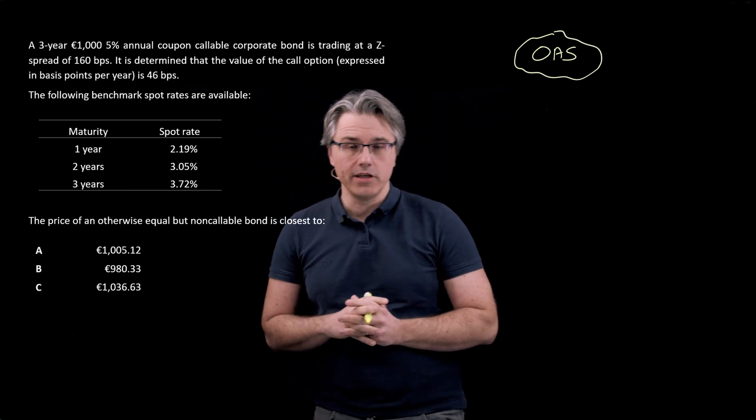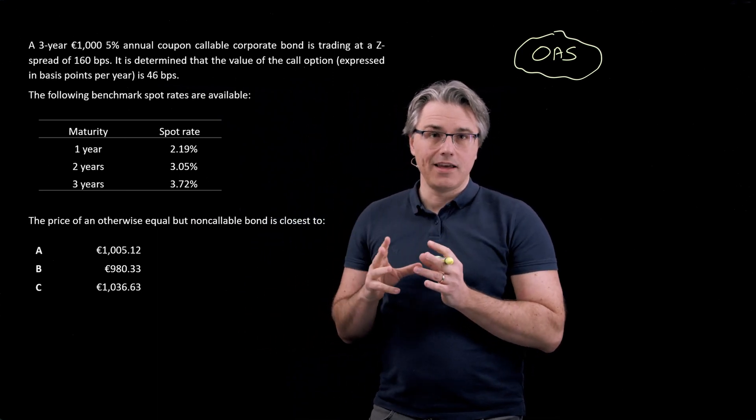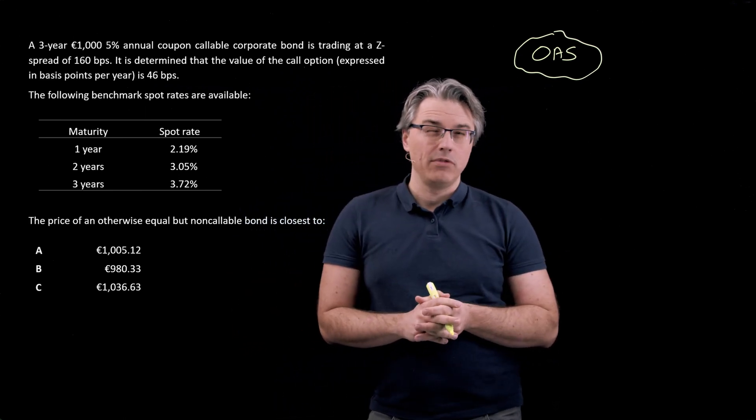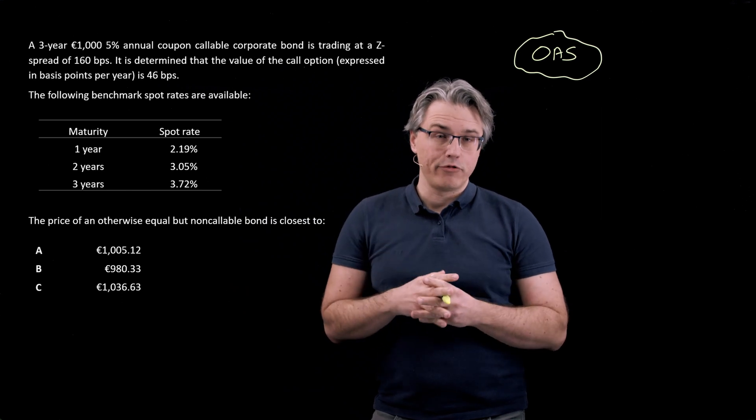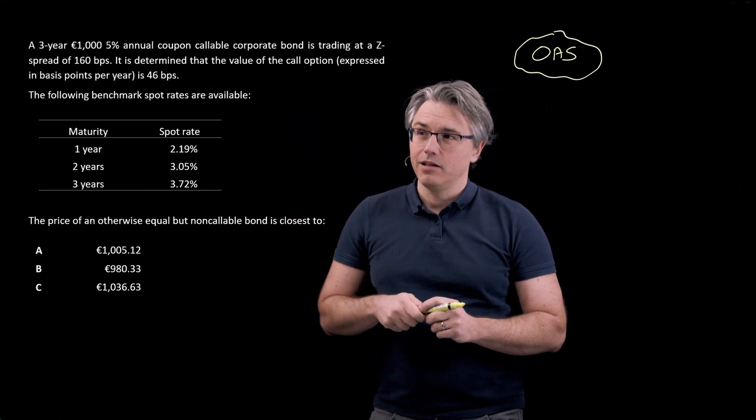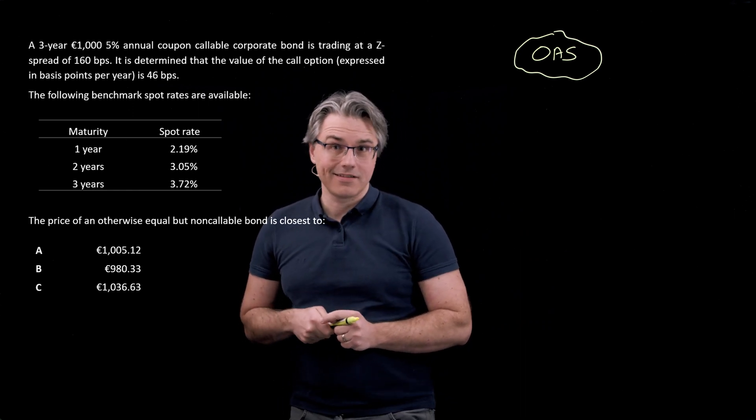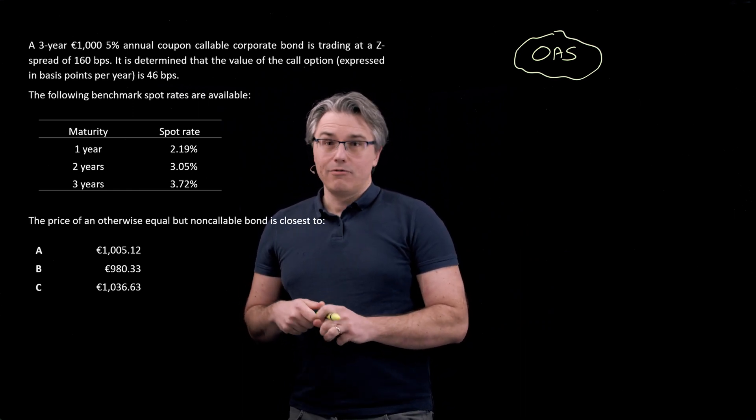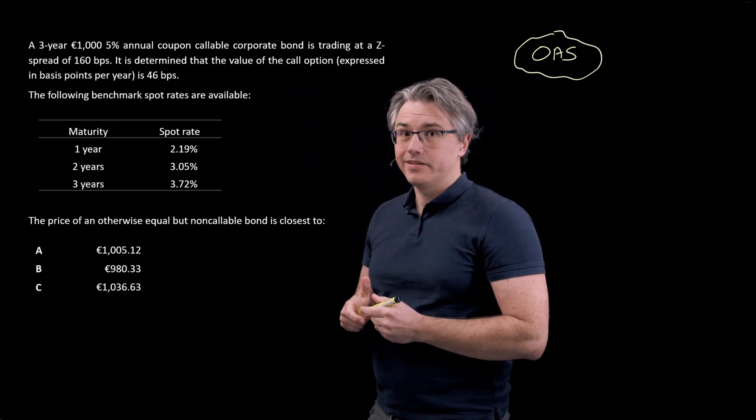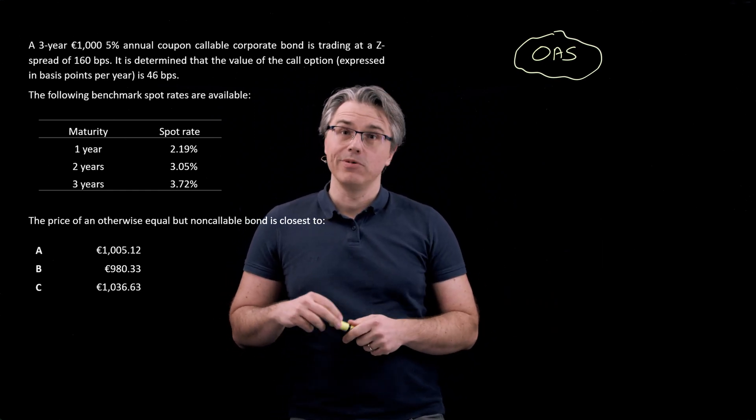We've got a set of three spot rates. This scenario is exactly the same as the one I used in a previous video where we used the Z-spread to compute the value of this callable bond. But look at the question now. The price of an otherwise equal but non-callable bond is closest to. So we're not supposed to price the bond from the scenario but an equivalent bond without the call option attached.